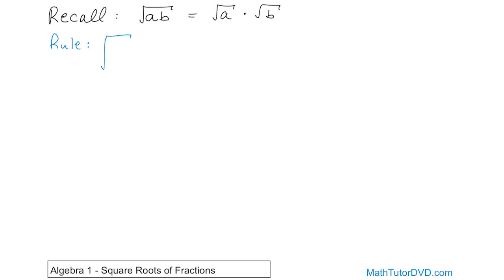If you have a radical of a fraction, a divided by b, so a fraction that's under the radical, that can be written as the square root of a divided by the square root of b. So the reason I had you recall this one first is because there's a lot of parallels between these two things.